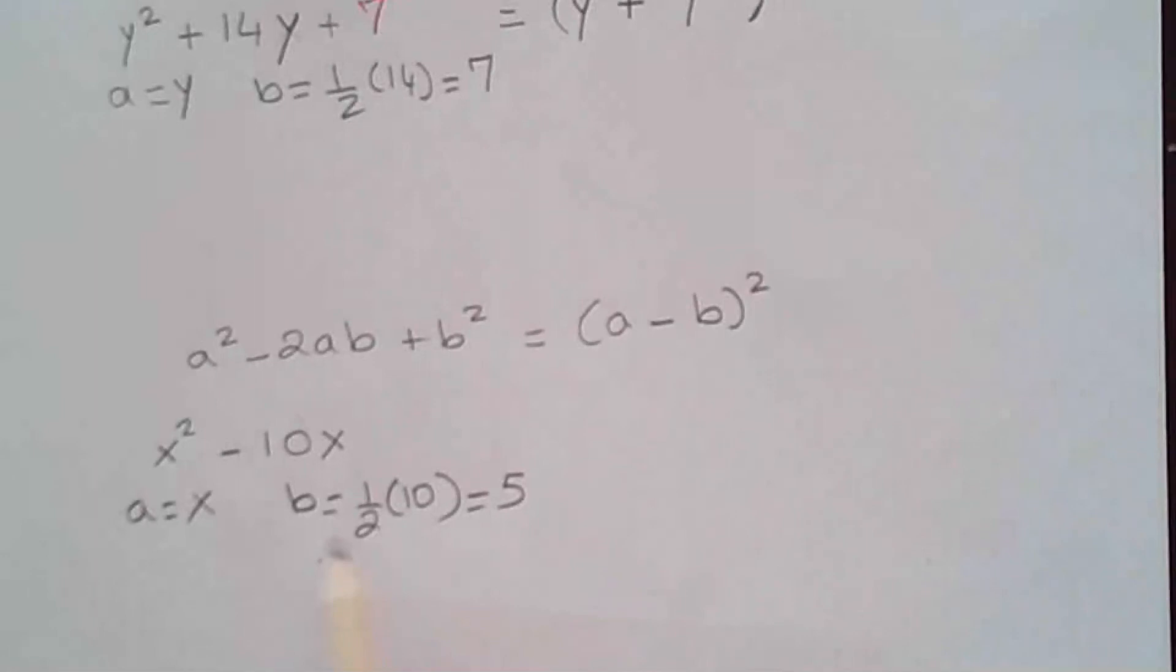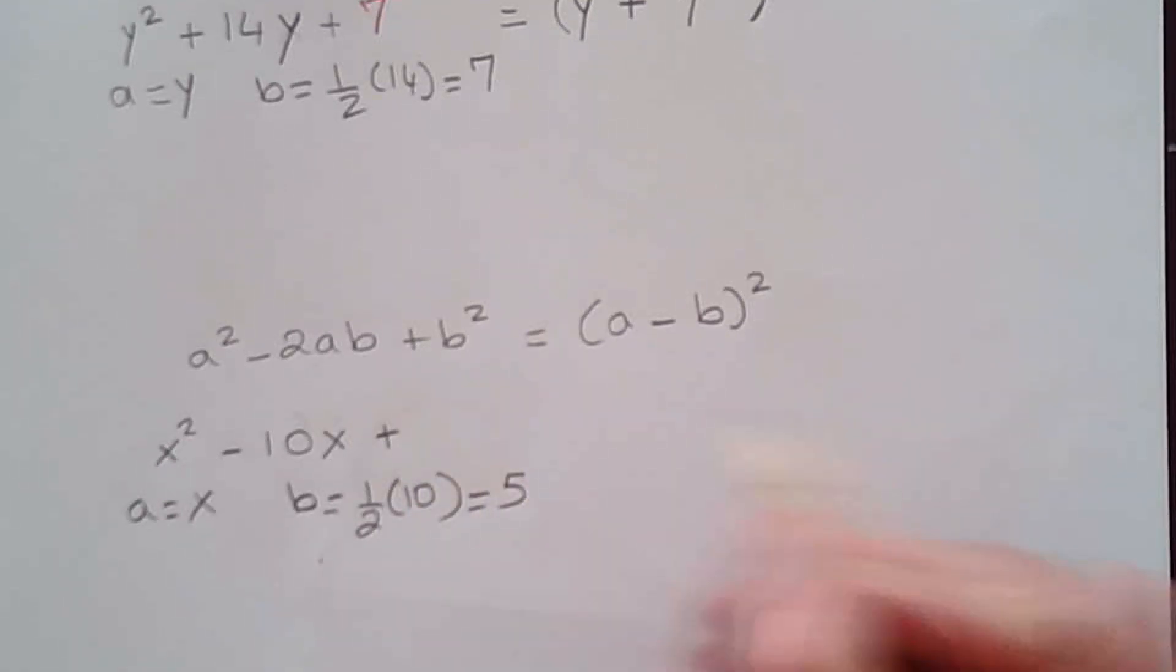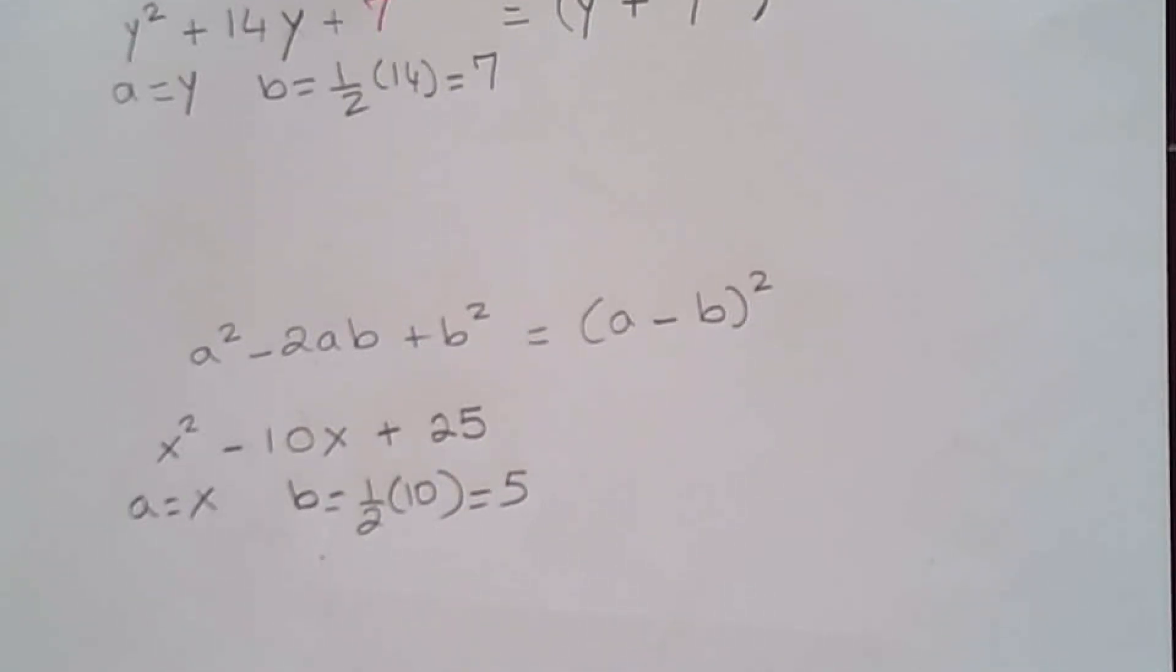Now I need to add b². So b² is 5². You may want to write 25, I can write 25 here, or you can write 5². Either one is correct. And then I just completed the square.